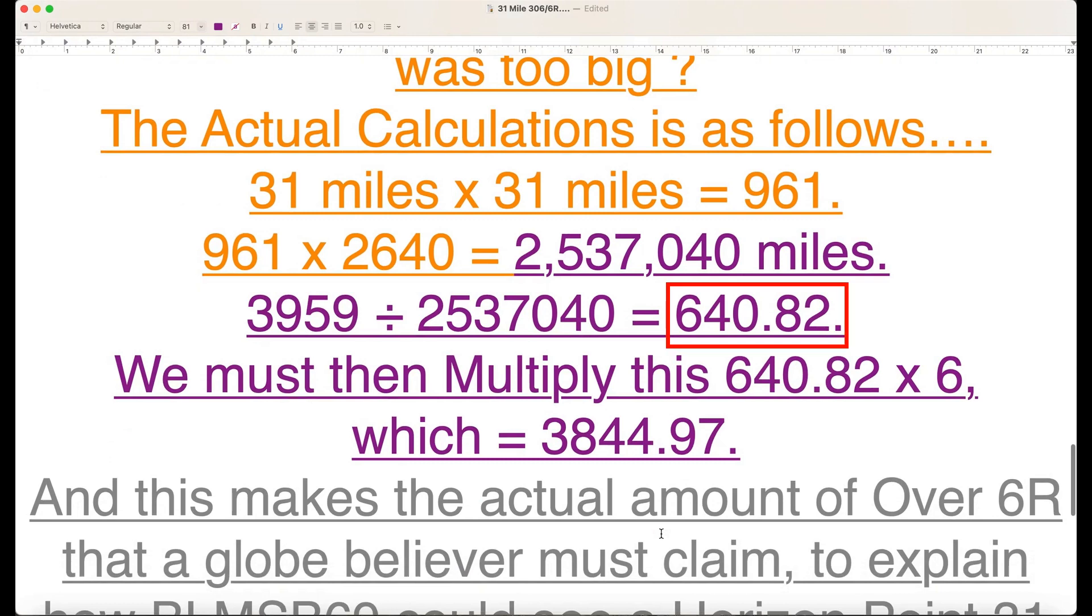What's the significance of 640? Why multiply that by 6, only to write it again as over 6? And what the heck is an over 6R?